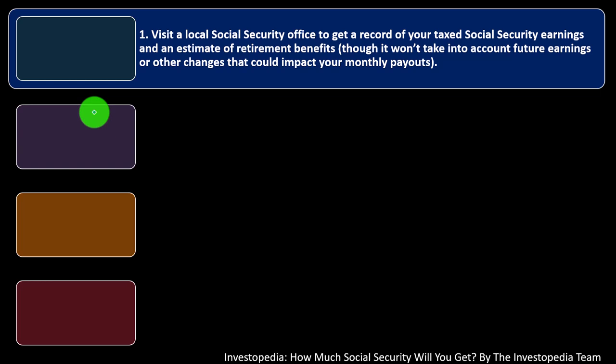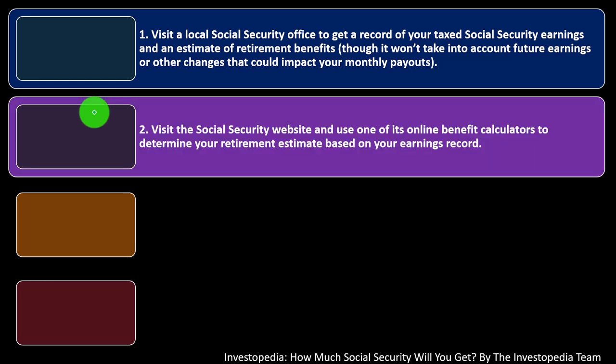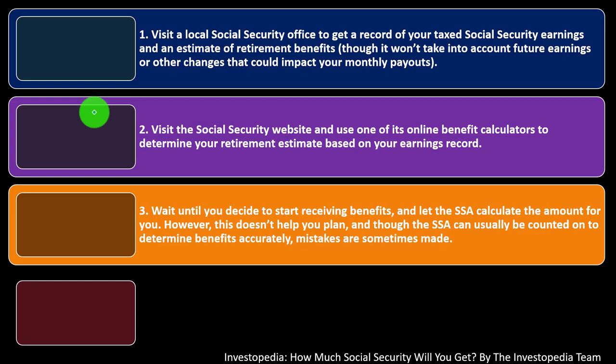You can get the amount of income that was subject to the tax because the Social Security Administration should have that. Number two: visit the Social Security website and use one of its online benefit calculators to determine your retirement estimate based on your earnings records. Once you have your earnings records in hand, that's one of the major factors in determining the benefits you would get. You can take those records and use the online calculator to help you calculate your benefits.